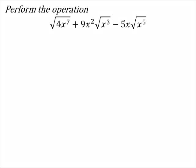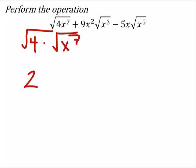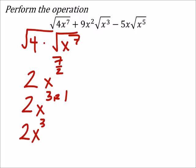We have square roots, but we don't have the square root of the same thing each time. Let's factor these out and simplify to get a common square root. First, we've got the square root of four times x to the power of seven. Splitting that up: the square root of four is two, and the square root of x to the seventh is x to the power of seven-halves, which is x to the power of three with a remainder of one — so that gives us two x cubed times the square root of x.